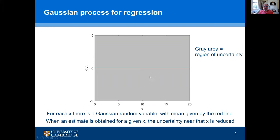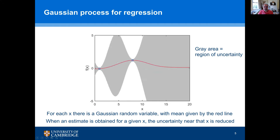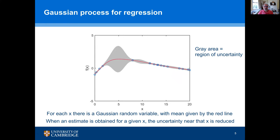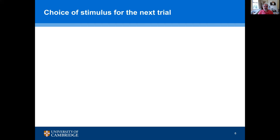Let's look at the issue of covariance. Imagine we start off knowing absolutely nothing about some function of x, where x could be frequency or level. This gray area is the region of uncertainty. Once we get an estimate for a given value of x, the uncertainty near that value is reduced — not only at that point but at nearby ones. If we keep repeating that process, we can gradually reduce the uncertainty and get a good overall estimate of the function.